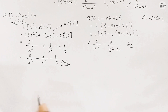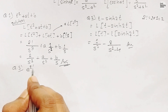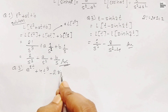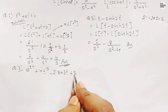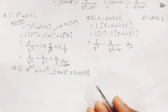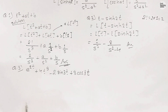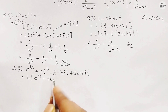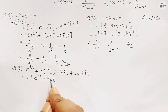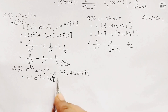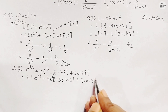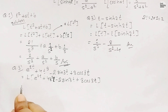Let's proceed to question number three, which is: find the Laplace transformation of e^(2t) + 4t³ - 2sin(3t) + 3cos(3t). This expression has four terms, so we separate them: L{e^(2t)} + 4·L{t³} - 2·L{sin(3t)} + 3·L{cos(3t)}.